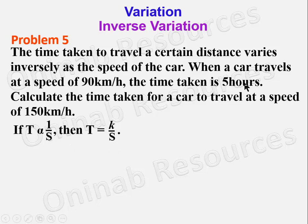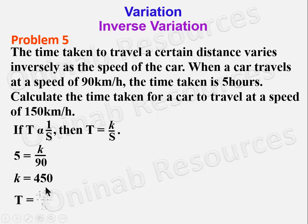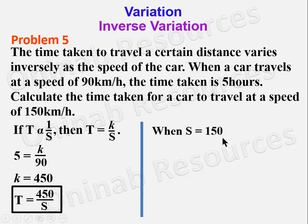At time t = 5 hours, the speed was s = 90, so 5 = k/90, giving k = 5 × 90 = 450. The relation is t = 450/s. To calculate the time when the speed is 150 km/h: t = 450/150. Cancelling zeros, 45 divided by 15 gives 3, so the time taken is 3 hours.